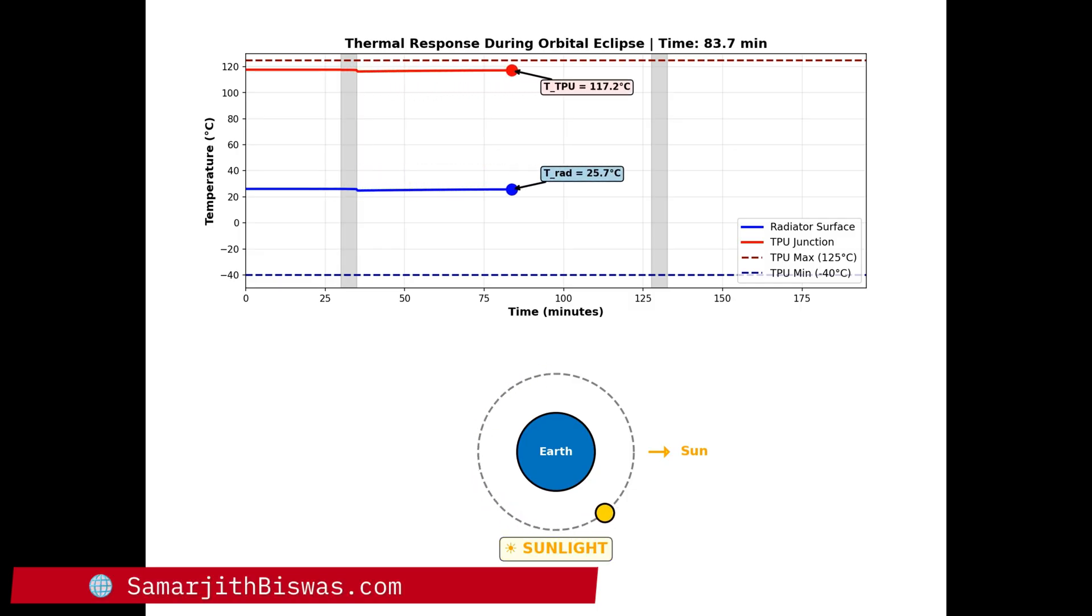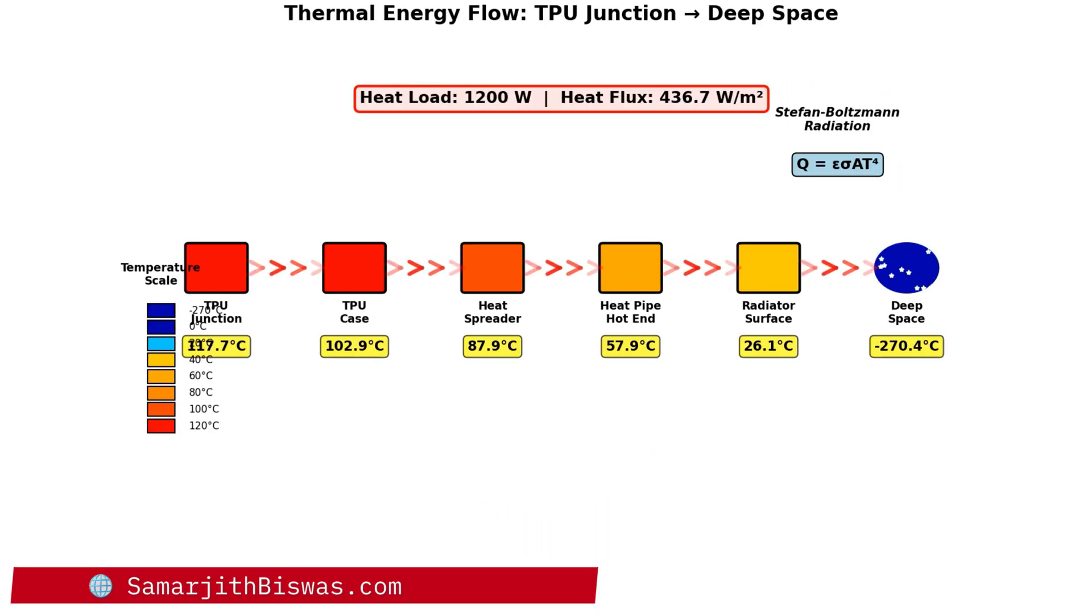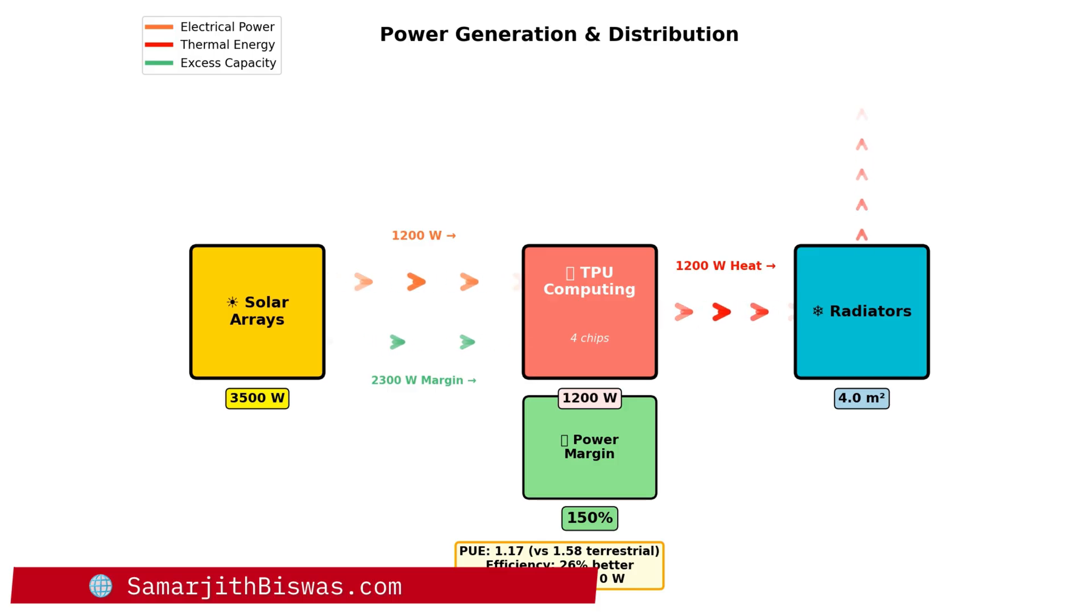The efficiency numbers tell the real story, right? Power usage effectiveness: 1.17. Ground-based data centers average 1.58, so that's about 26% better efficiency. Zero water consumption, zero direct carbon emissions, and basically unlimited cooling capacity.